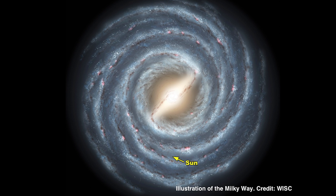Our galaxy, the Milky Way, takes about 240 million years to complete a full rotation. But we pass through a major spiral arm every 100 million years or so, remaining in the higher density region for about 10 million years.